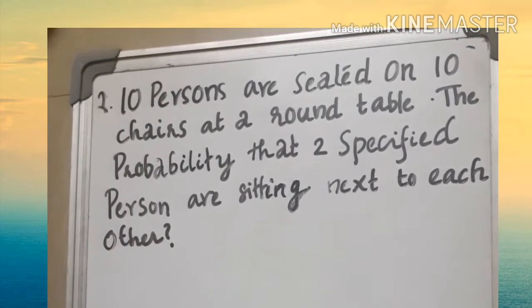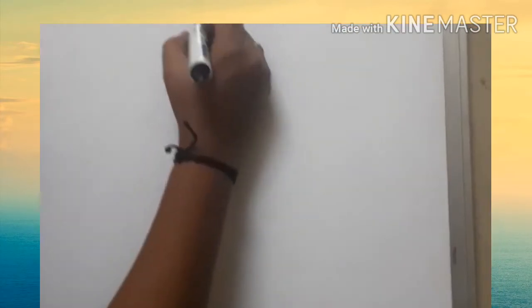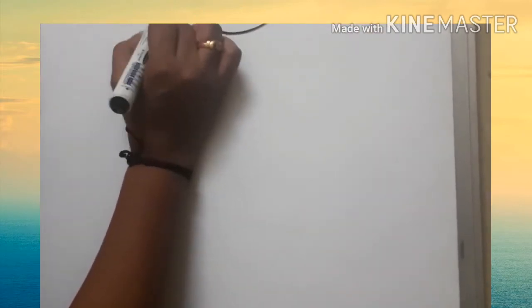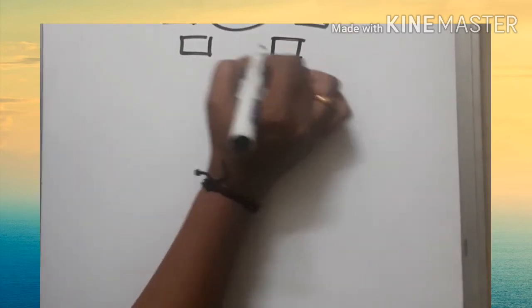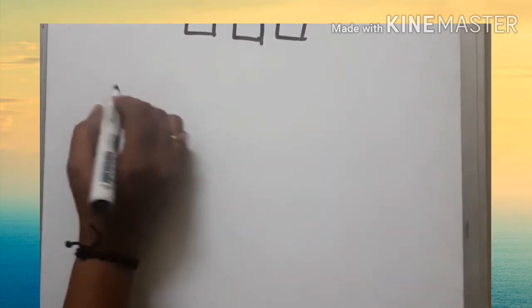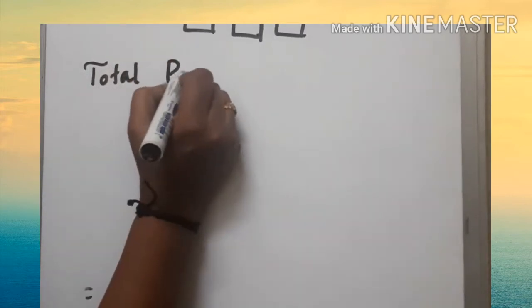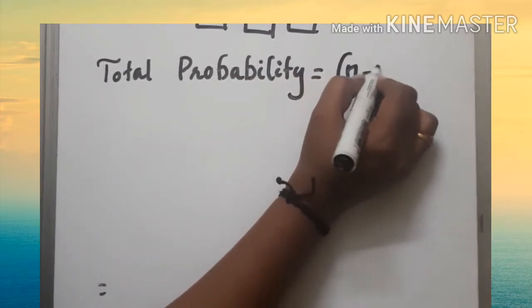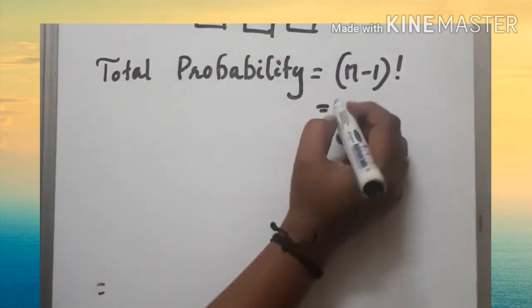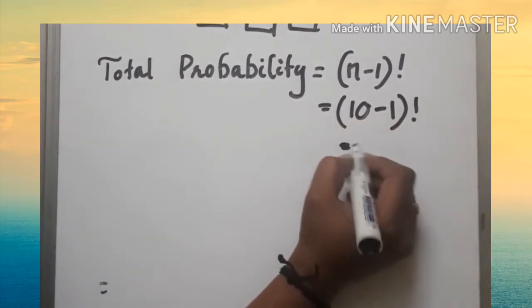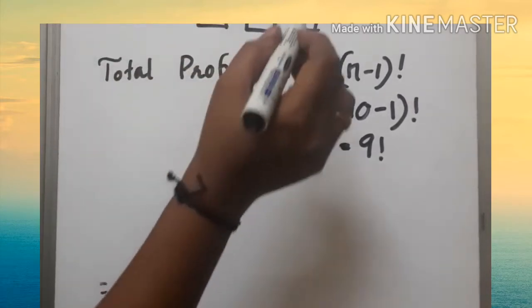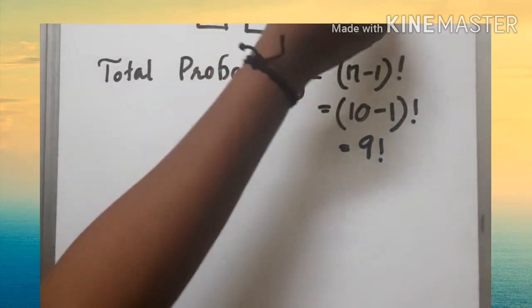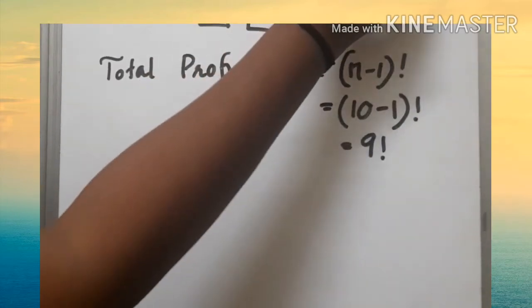The values are: 2, 4, 5, 6, 7, 8, 8, 9, 9, 10. What is the total probability? We have to use n-1 factorial. That is 9 factorial, 3 factorial, 1 factorial, and 4 factorial.